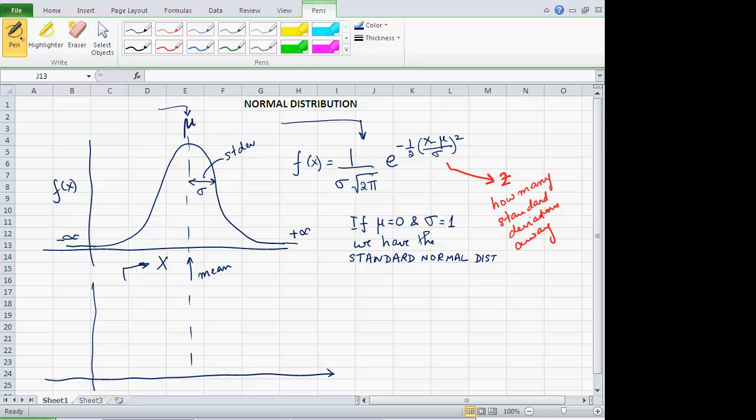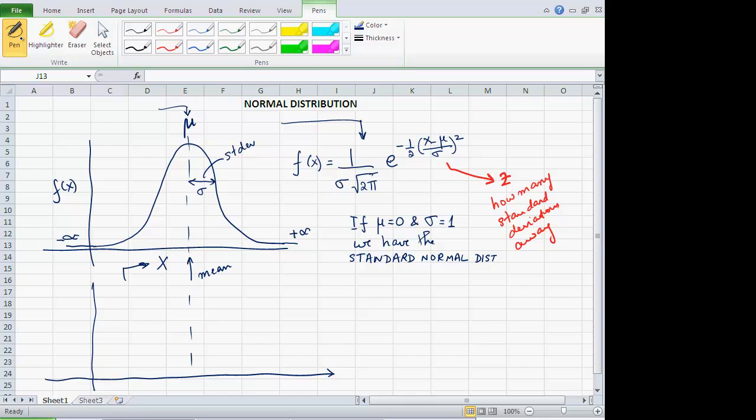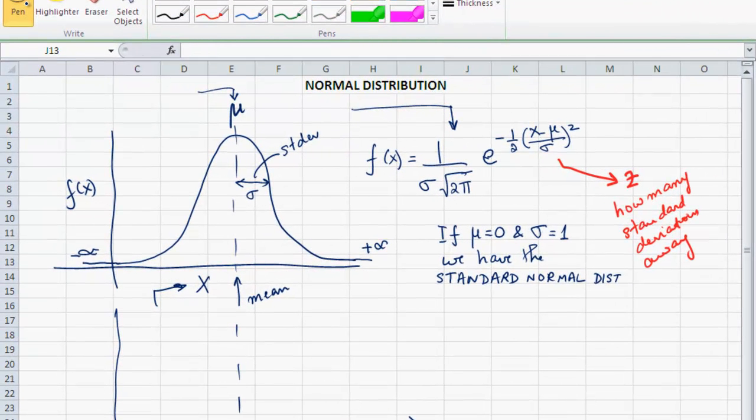The probability density function is given by this expression: 1 divided by sigma square root of 2 pi, e to the minus half, x minus mu divided by sigma squared. You can see that sigma is in the denominator, the standard deviation. So, other things remaining equal, if the standard deviation were to increase, the curve would get fatter.